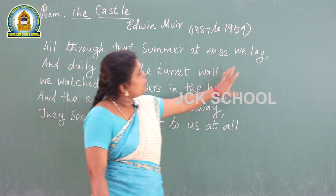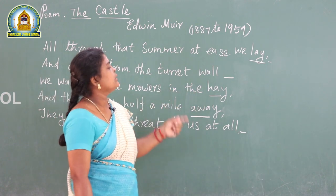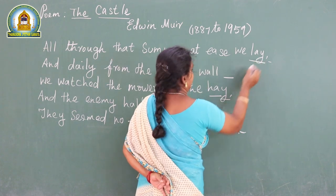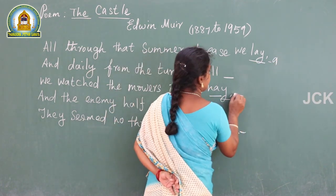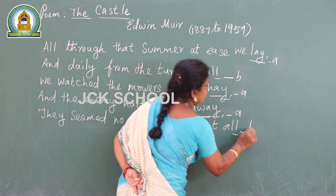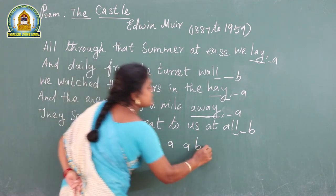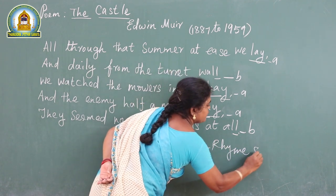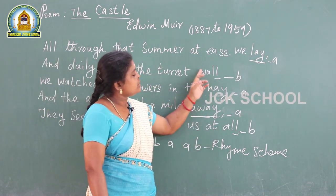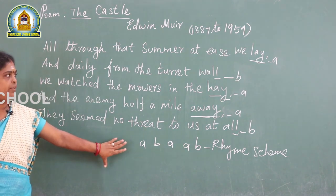In the first five lines, some poetic devices are used. The rhyming scheme — rhyming scheme means the last letters of lines rhyme together, like 'lay,' 'hay,' 'away' rhyme as A, and 'wall' and 'all' rhyme as B. So the rhyming scheme of the first stanza is A-B-A-A-B. The rhyming words are: lay, hay, away — and wall, all. There are no figures of speech in these lines; only the rhyming scheme is present.